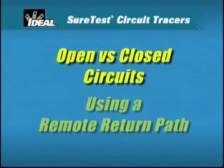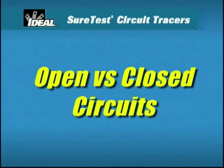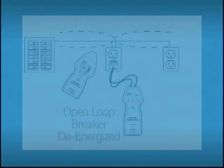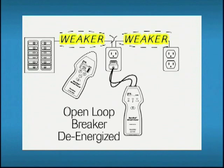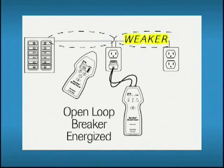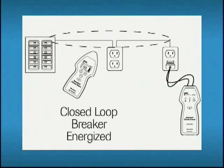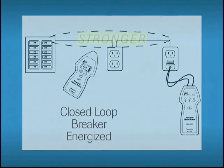The first concept is the effect that an open versus a closed circuit has on the signal. Whether a circuit is open or closed greatly affects the strength of the electromagnetic field. In an open circuit, there is no current flow, so the strength of the magnetic field produced is much weaker. But in an energized closed circuit, current flows to produce a much stronger electromagnetic field, allowing the receiver to detect the signal from a much greater distance. So when possible, set up a closed circuit for tracing.